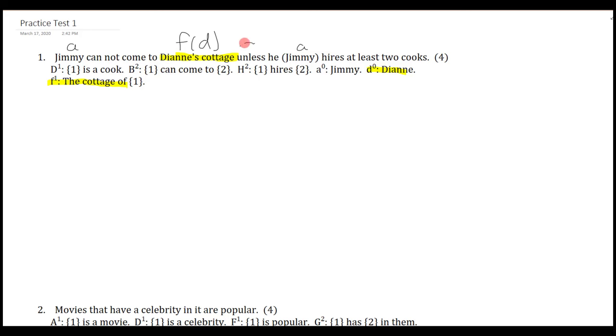So this, unless we know, is going to be some sort of OR. And because I'm using name letters, it actually means that I don't really need to introduce any subjects with quantifiers until I get to the two cooks business. So let's just go for Jimmy cannot come to Diane's cottage. So here's can come to. So it's not the case that Jimmy can come to Diane's cottage, which we already figured out is F of D. So that's the first part.